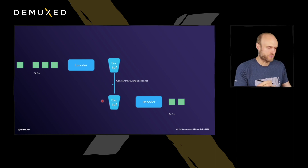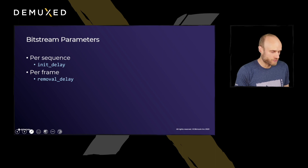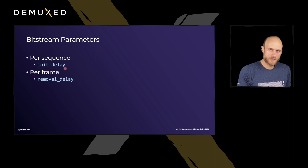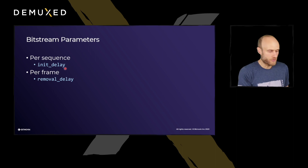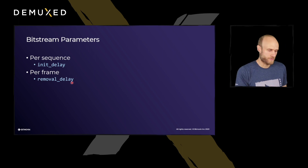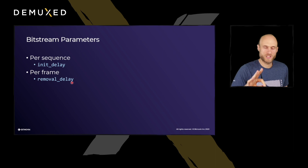There are a few parameters signaled in the bitstream that are important here. Per sequence, there's an initial delay that is signaled — basically how long we wait before we start decoding. And then per frame, there's also a removal delay, which indicates when a frame is to be removed from the buffer.